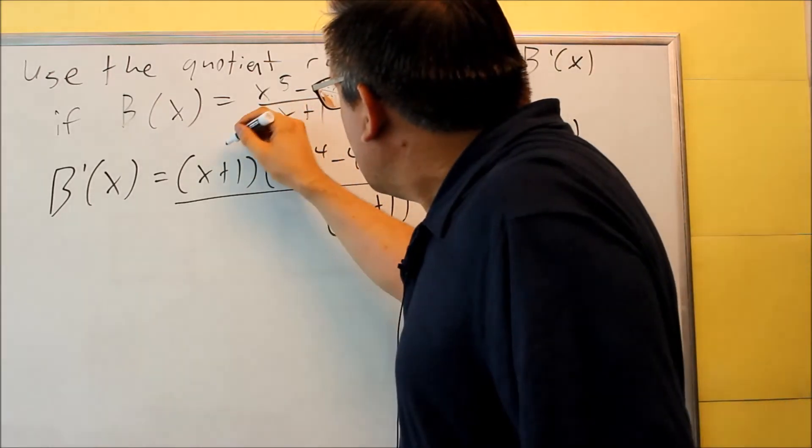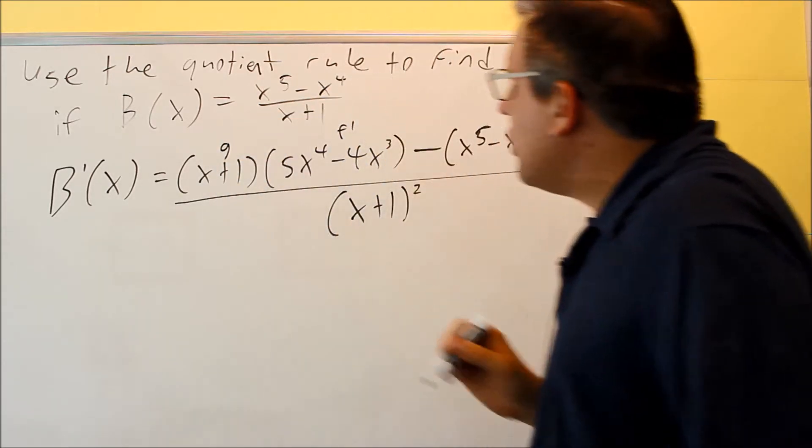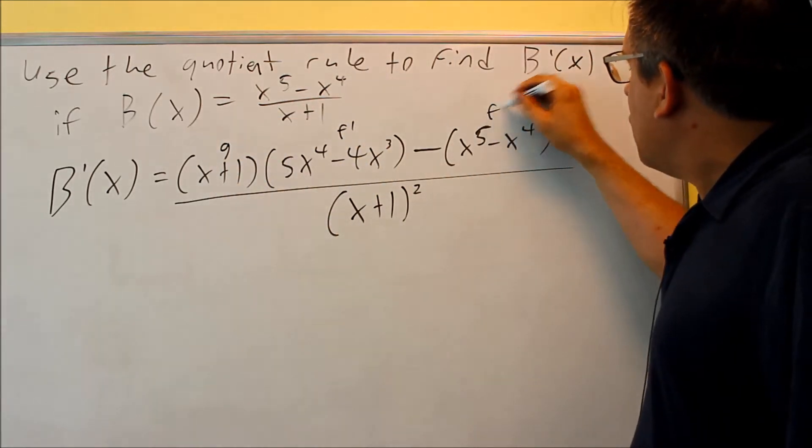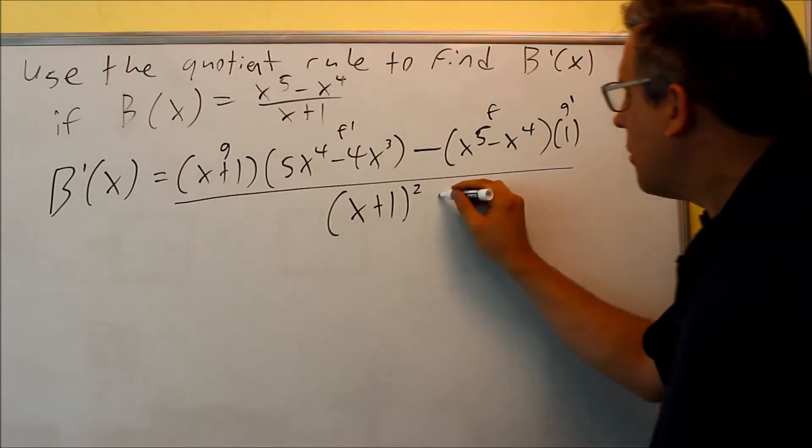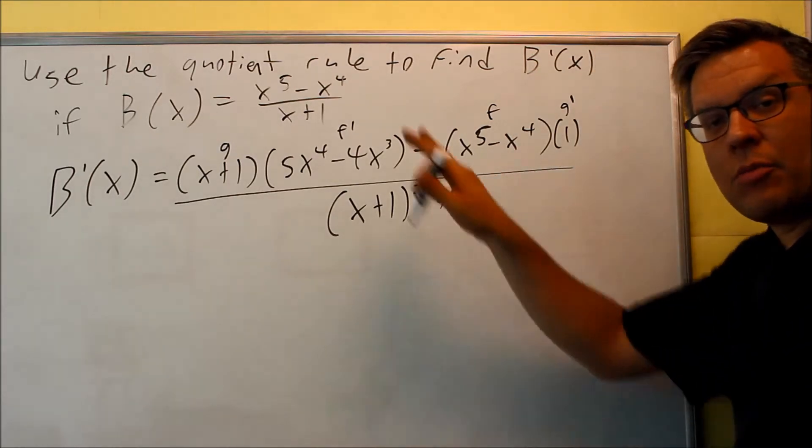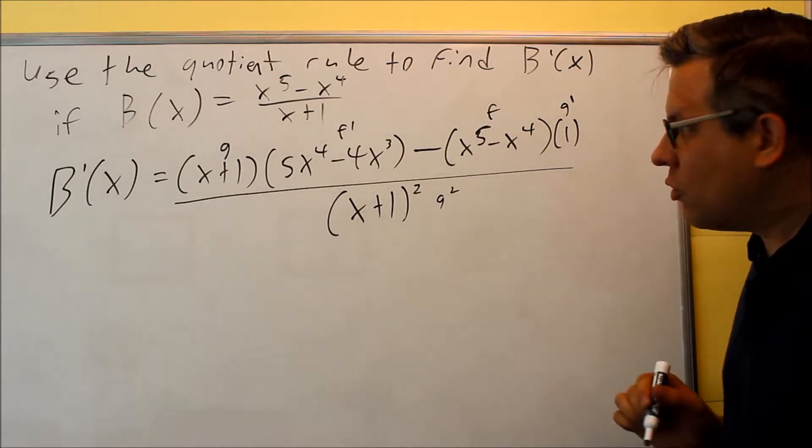So, again, we write the formula out. We've got the bottom, drew the top. So, g, f primed minus g, or f. And then this is g primed here. The bottom one is g squared. So, again, labeling everything from the quotient rule formula.